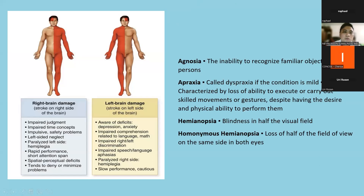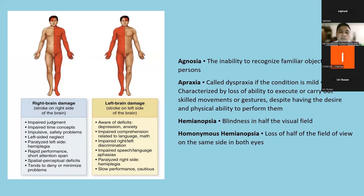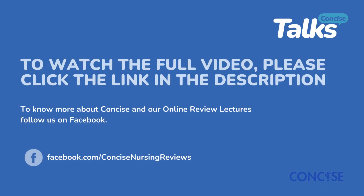We also have right brain damage and left brain damage. With right brain damage, which is more the creative side, there will be impaired judgment, impaired time concepts, impulsive behavior, and left-side neglect — the patient cannot recognize that they have weakness on their left side. The patient will also have paralysis or hemiplegia on the left side.